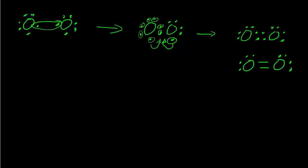Now they're sharing electrons so that each atom has eight. Counting the electrons around one oxygen — including the shared pairs — we get to eight, an octet. The oxygen on the right also has eight electrons when we count the shared electrons. So each oxygen atom achieves a full octet through the double bond.